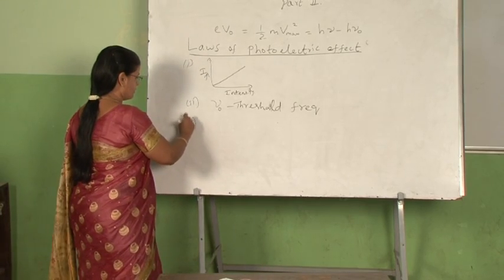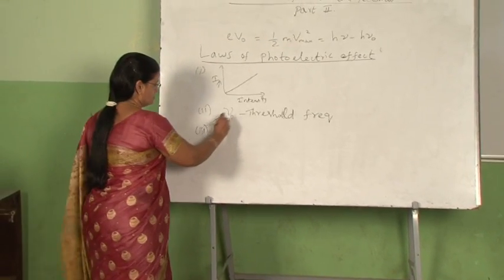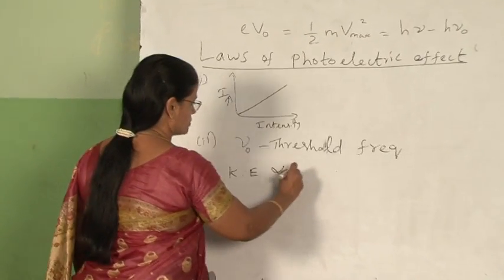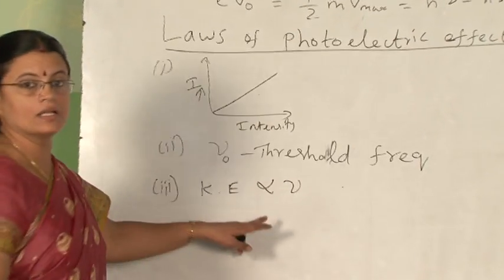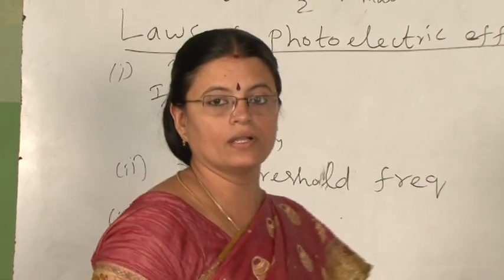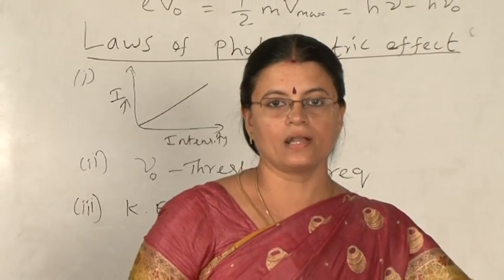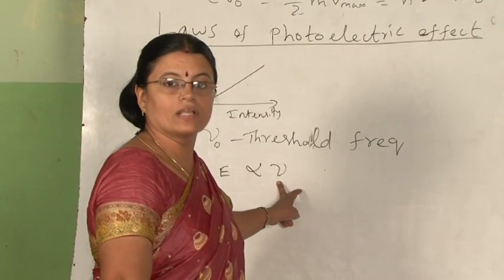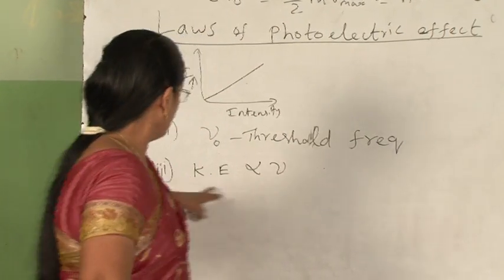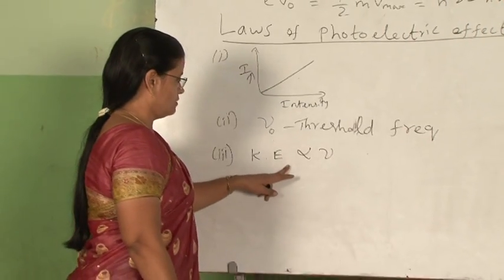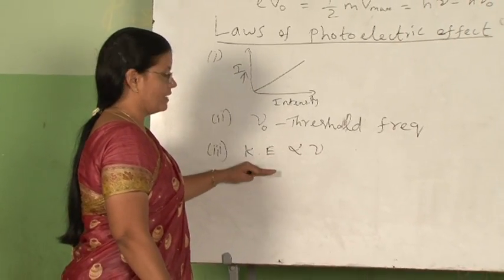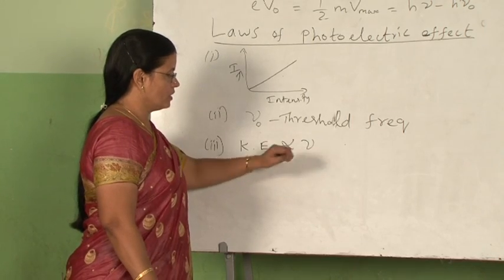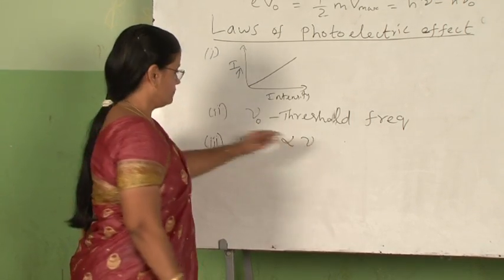The third law states that the kinetic energy of photoelectrons emitted is directly proportional to the frequency of incident photons, and it does not depend on the intensity of incident light. This was also explained clearly with the help of a graph yesterday. The kinetic energy of emitted photoelectrons is directly proportional to the frequency of incident photons.